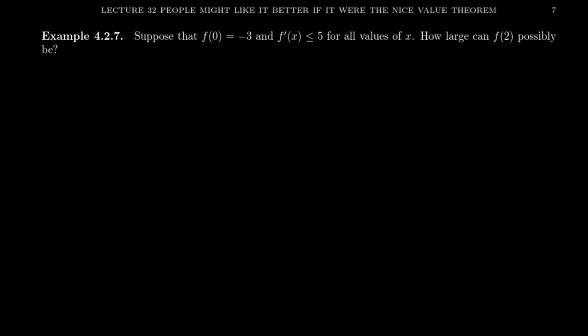Suppose we have a function f so that its y-intercept is negative 3, and suppose we know that the function's derivative never gets bigger than 5. Could I make a guess where that particle is going to be the moment where time is 2?